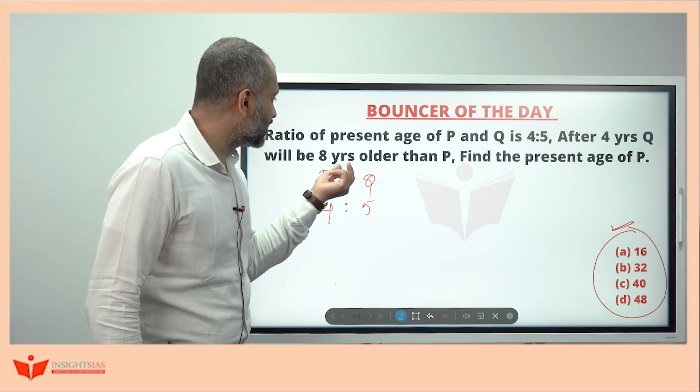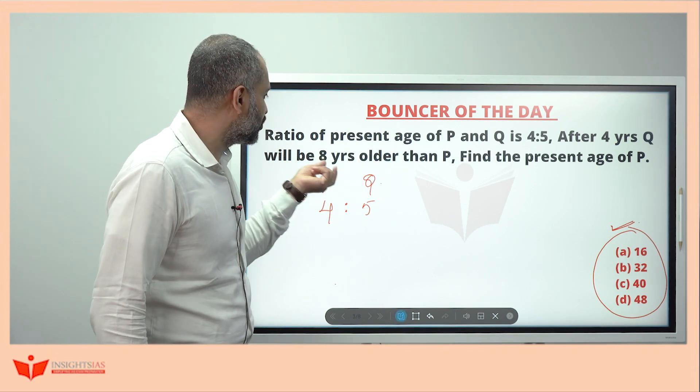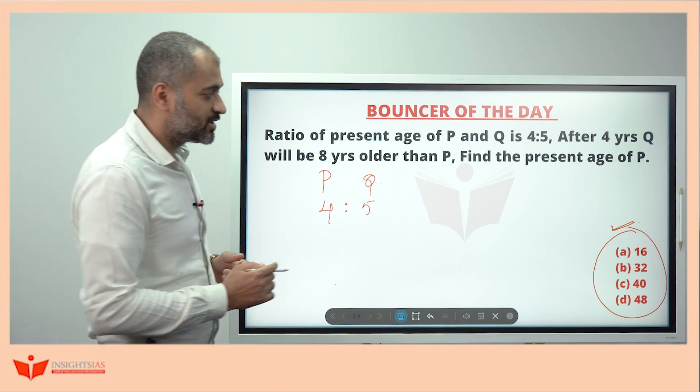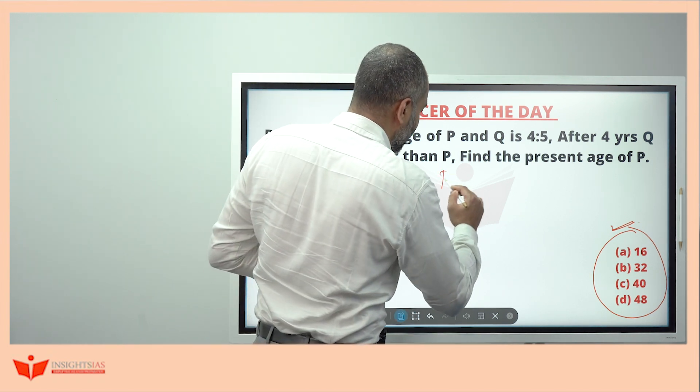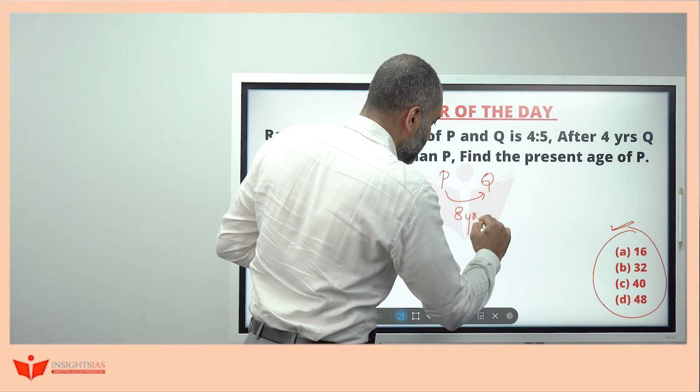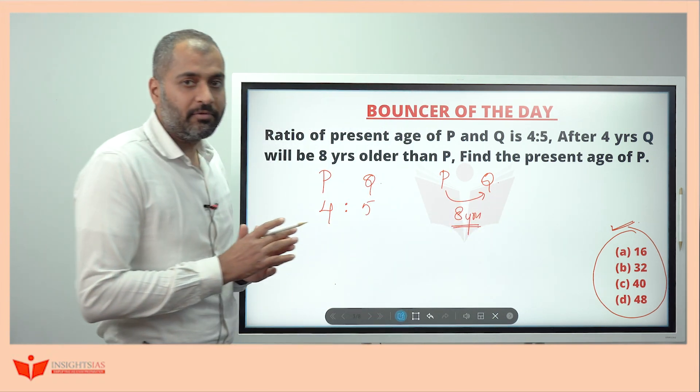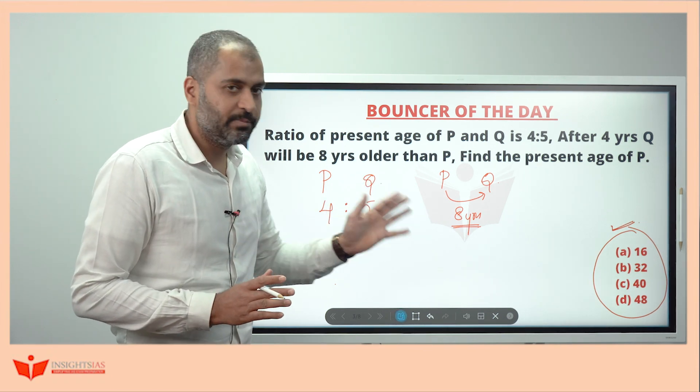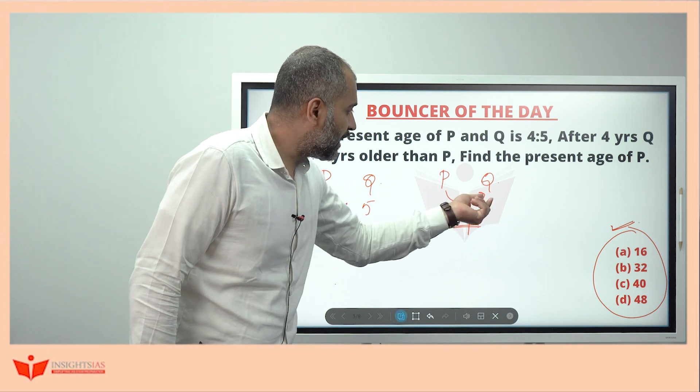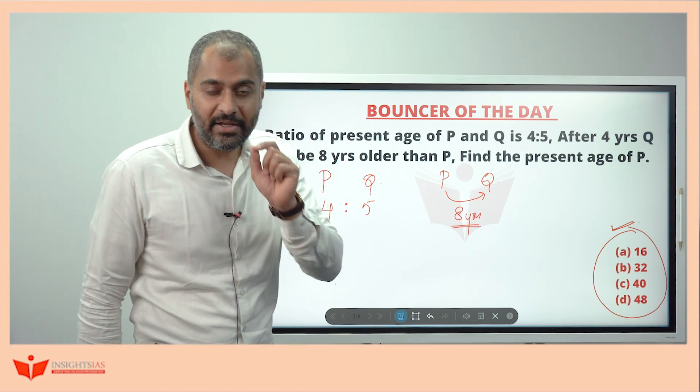After 4 years, Q will be 8 years older than P means the difference between P's and Q's age always should be 8 years. Once they are born with 8 years of age gap, after 4 years, before 4 years, after 10 years, 20 years, whatever the years, the age gap between these two will be 8 years.